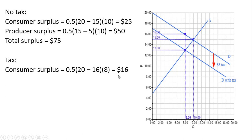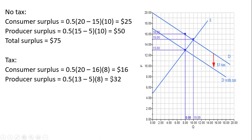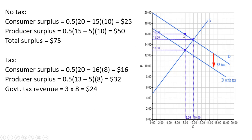With the tax, consumer surplus falls. Consumers are now paying $16, so the difference between the height of the demand curve and $16, up to the 8th unit, gives a consumer surplus triangle of $16. Producer surplus is another triangle: producers receive only $13, so the height is 13 minus 5, the base is 8, giving producer surplus of $32. The government is taxing 8 units at $3 a unit, so government tax revenue is $24 — a rectangle with width 16 minus 13 and length 8 units. Total surplus is $16 plus $32 plus $24, which equals $72.